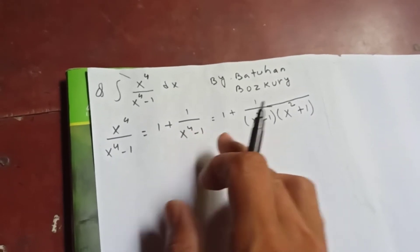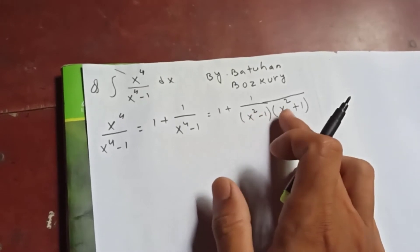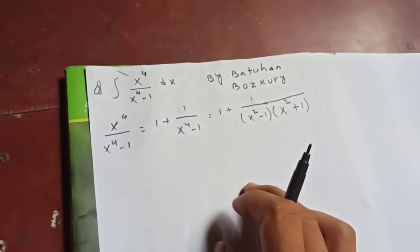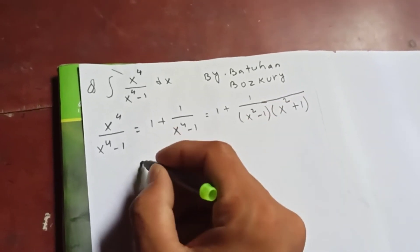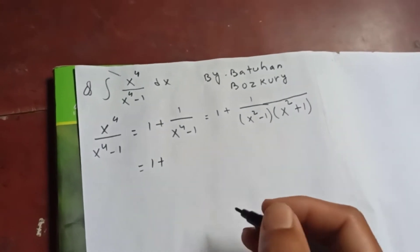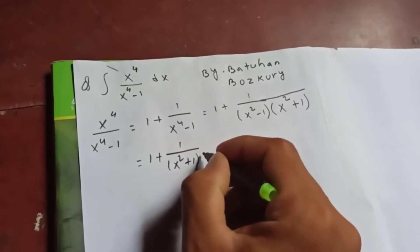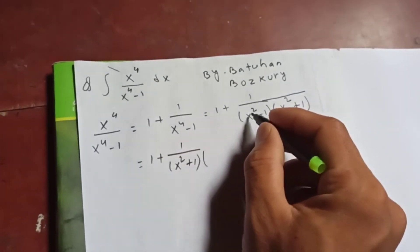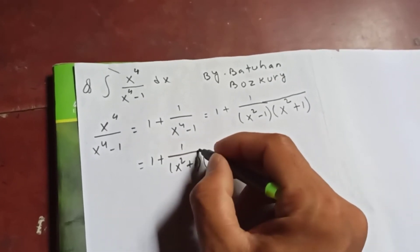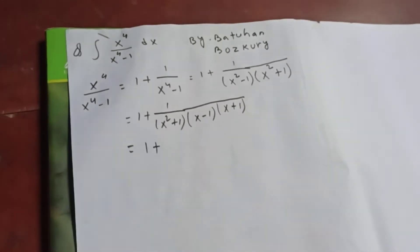So x to the 4 minus 1 can be written as x squared minus 1 times x squared plus 1, which is the difference of squares: a minus b times a plus b equals a squared minus b squared. We can apply this factoring one more step to x squared minus 1 as well.